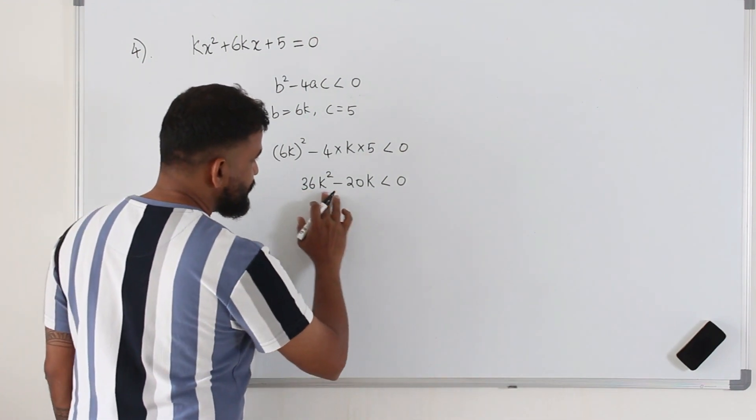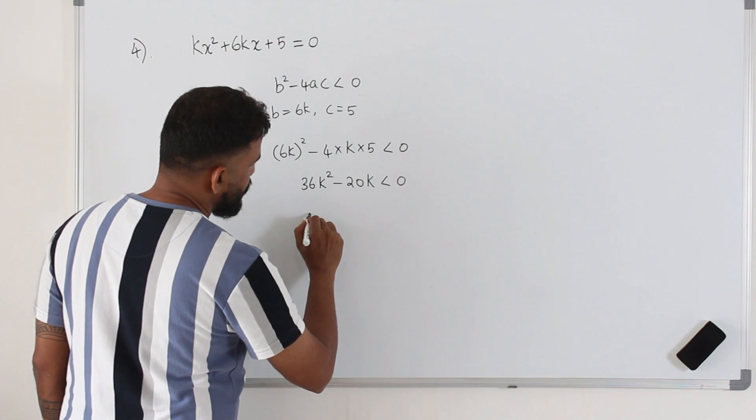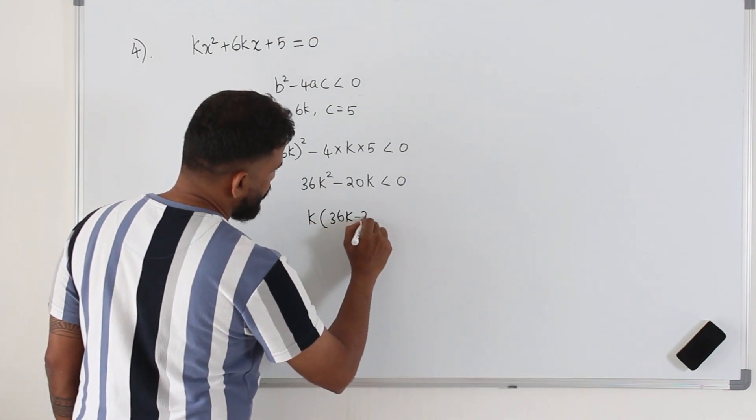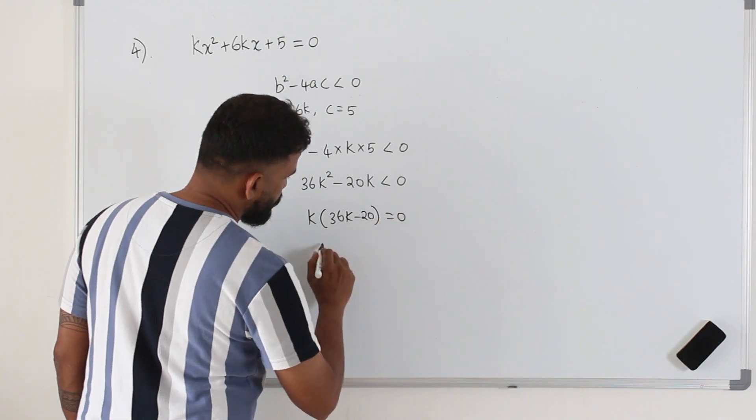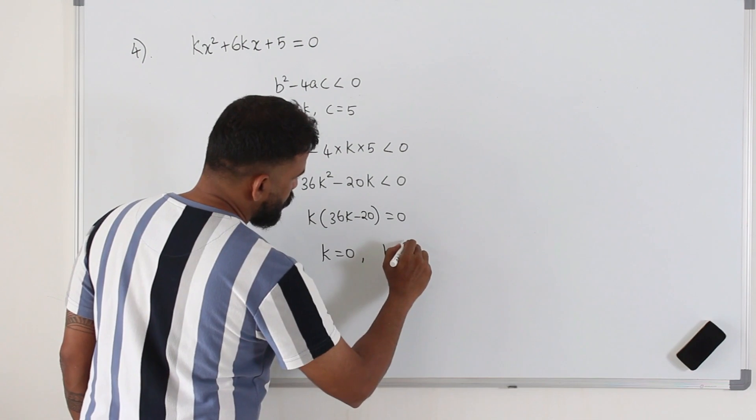Step number one: treat this as an equation and find the two k values. You can write this k times 36k minus 20 is 0. You will get k is 0, k is 20 over 36.